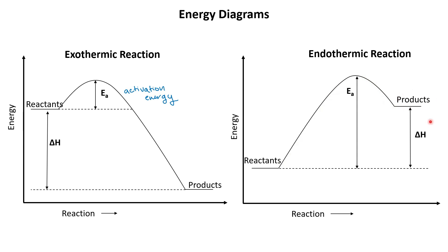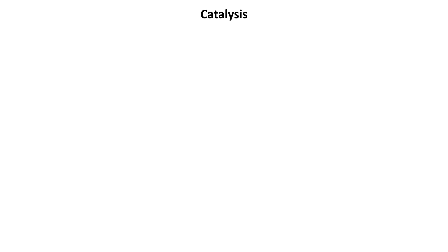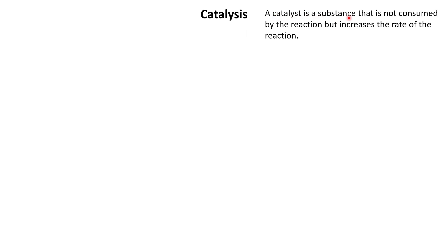Now that we understand the basics of energy diagrams, let's talk about how the energy diagram will change if you add a catalyst to the reaction. A catalyst is some substance that is not going to be consumed by the reaction, but it's going to increase the rate of the reaction. It is not a reactant and not a product, but it is going to make the reaction go faster.